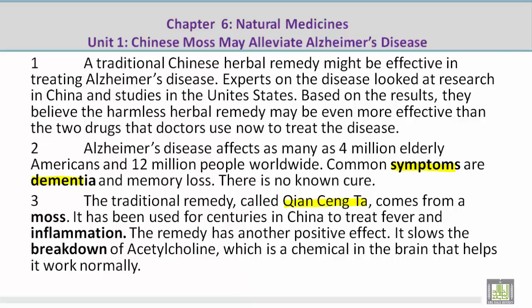Paragraph 3. The traditional remedy called Qian Seng Ta comes from a moss. It has been used for centuries in China to treat fever and inflammation. The remedy has another positive effect: it slows the breakdown of acetylcholine, which is a chemical in the brain that helps it work normally.